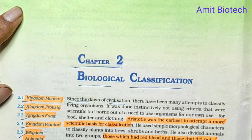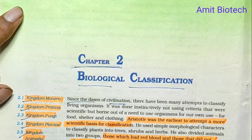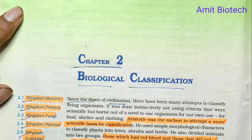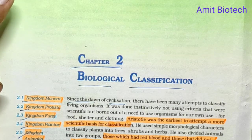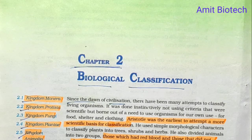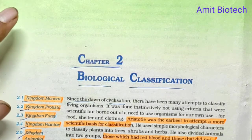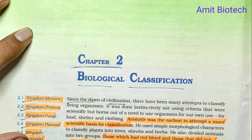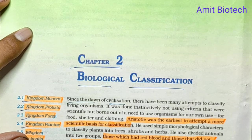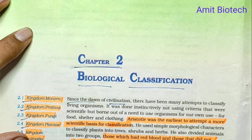Linnaeus later gave us the two-kingdom system of classification, consisting of Kingdom Plantae and Kingdom Animalia. This system was developed to include all plants and animals respectively under two separate kingdoms.